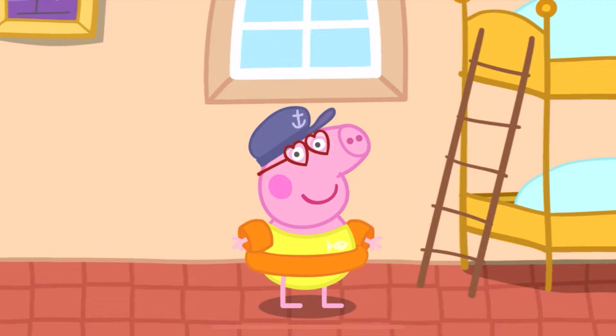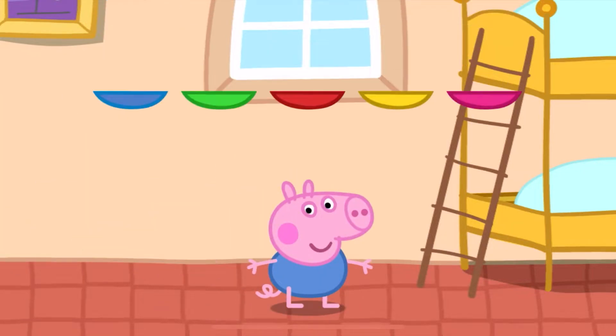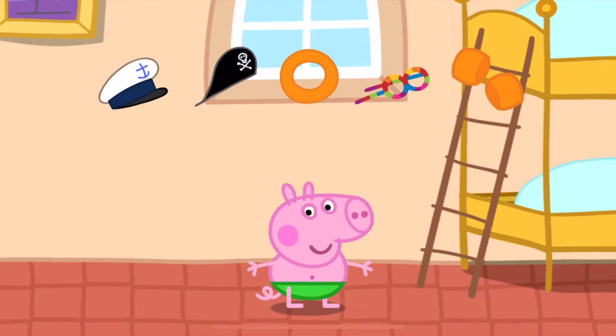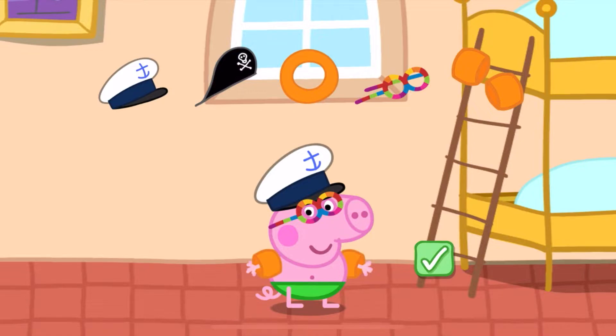Now it's George's turn. Touch a pair of swimming trunks for George. That's a nice choice! Touch your favourite items for George to wear. You can add some other items too. Touch the tick when you've finished.